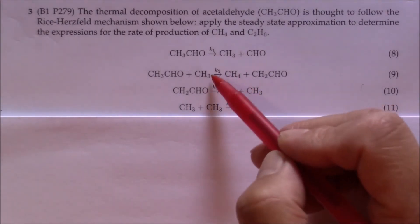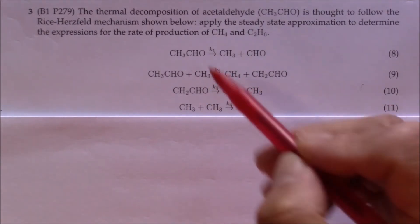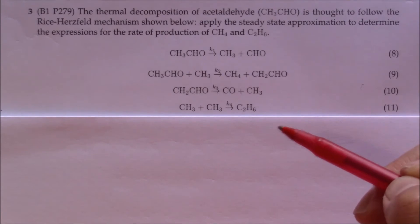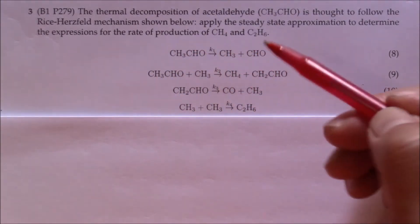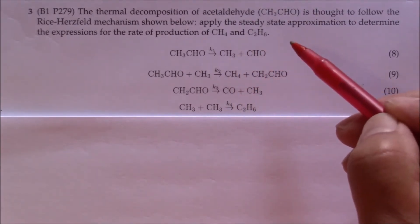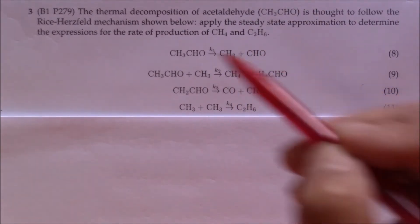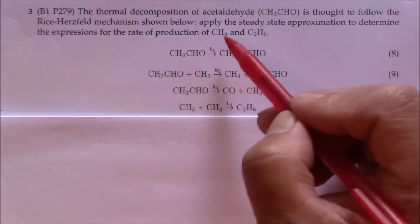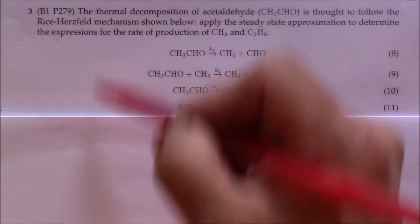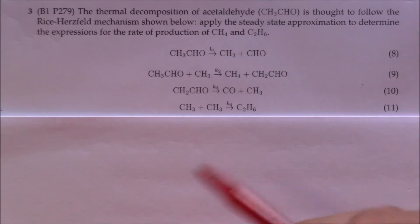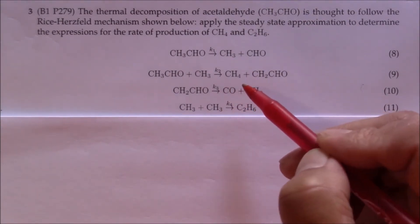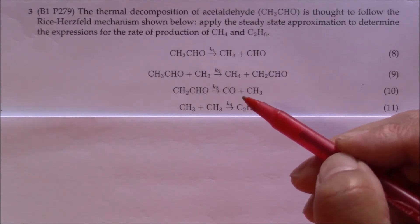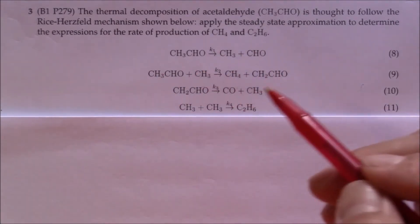Here is our example. It takes four elementary steps from the reactant to the products. We need to find the expression for the rate of production of CH4 and C2H6. Let's look at how we get the rate of production of CH4 first. When we look at the four elementary reactions, only the second step will produce CH4. We can write down the rate law expression from the second elementary reaction first.